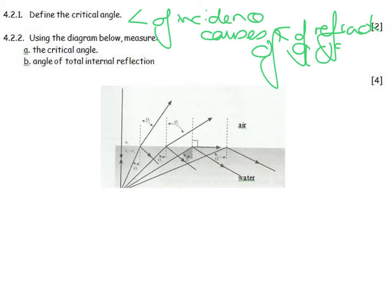Use the diagram below to measure the critical angle. So I need to say, what was the angle of incidence that caused an angle of refraction of 90 degrees? It was that angle over there. And when I measure it, it's 58 degrees.